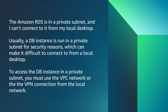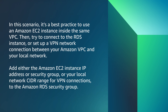Let's take a look at the second scenario. The Amazon RDS is in a private subnet and I cannot connect to it from my local desktop. Usually, a DB instance is run in a private subnet for security reasons, which can make it difficult to connect to from a local desktop. To access the DB instance in a private subnet, you must use the VPC network or the VPN connection from the local network. In this scenario, it's a best practice to use an Amazon EC2 instance inside the same VPC.